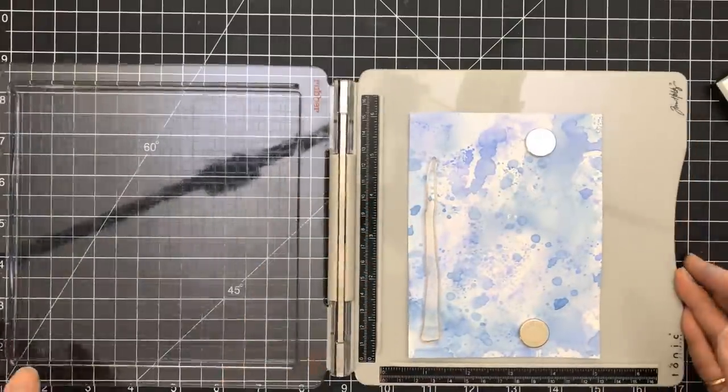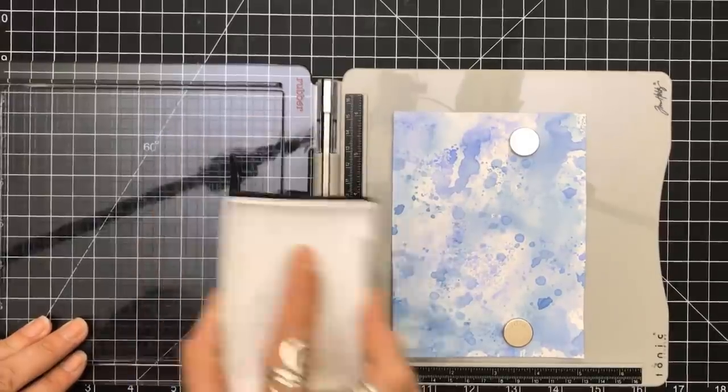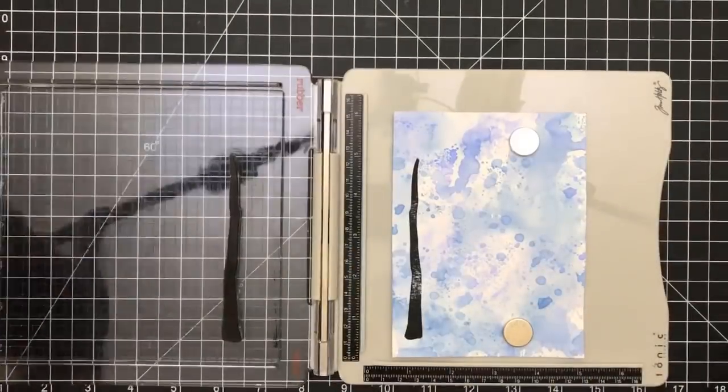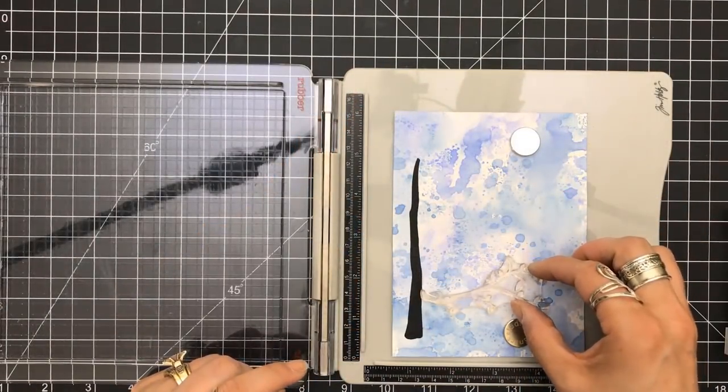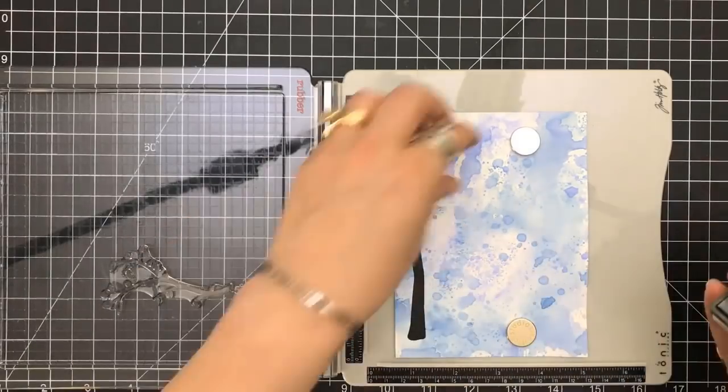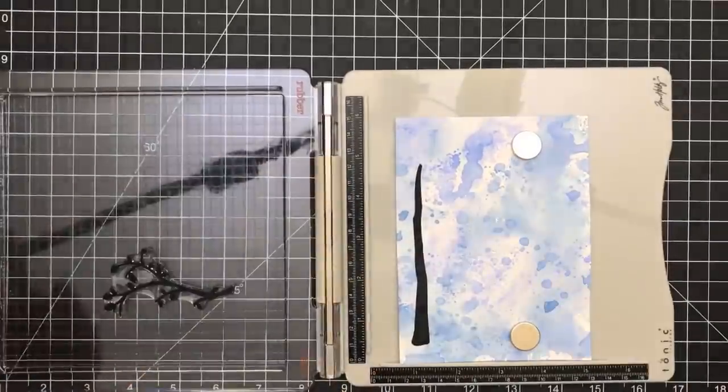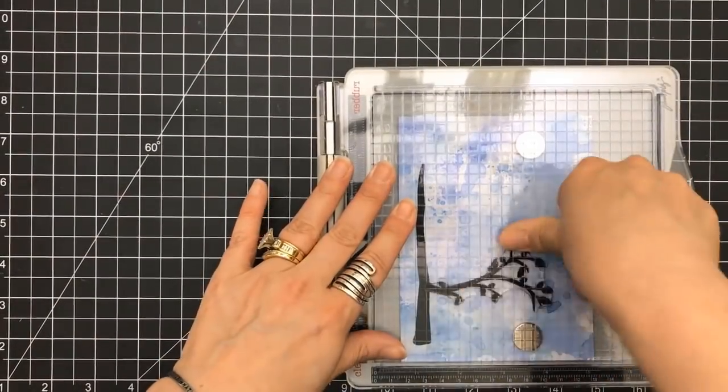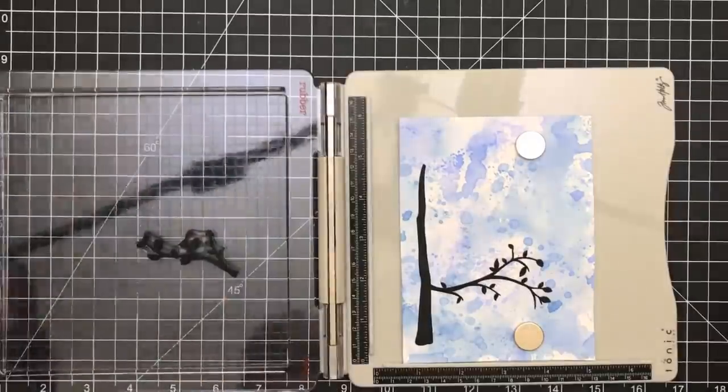I'm first going to grab the trunk and I'm using my Tonic Studios Tim Holtz stamp platform. I do apologize for the glare. The room is in process of getting set up the way I've dreamed of. I'm using my VersaFine ink to stamp my images because I want these to be solid black. The VersaFine Black Onyx is the best ink for that.